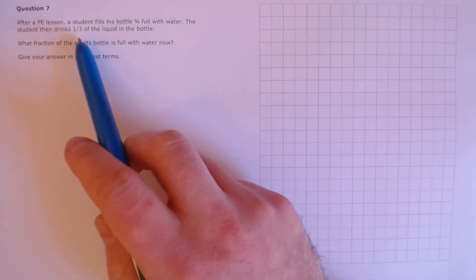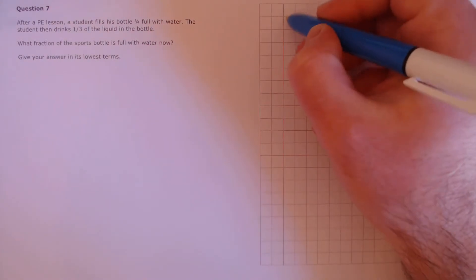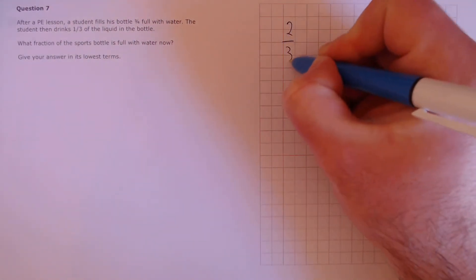If the student drinks one-third of the liquid in the bottle, then the remaining amount of liquid in the bottle should be two-thirds of whatever was there originally.